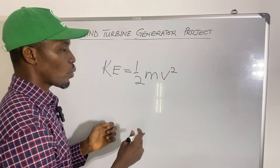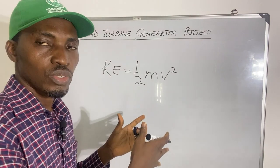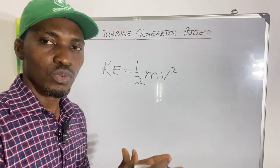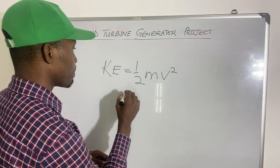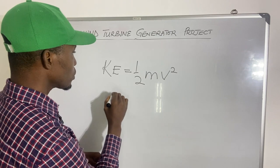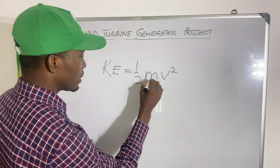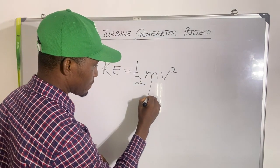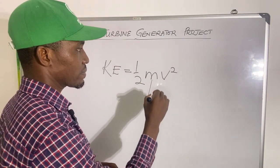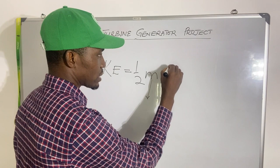So when you are substituting variables into the equation, you need to consider this. So let's look at it. This is the mass. This is the velocity — change in position with respect to time.